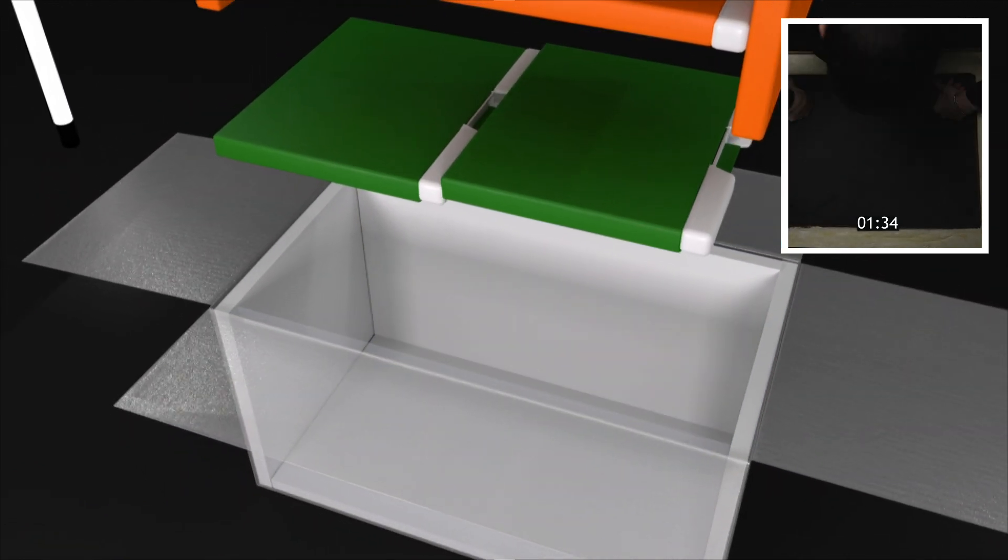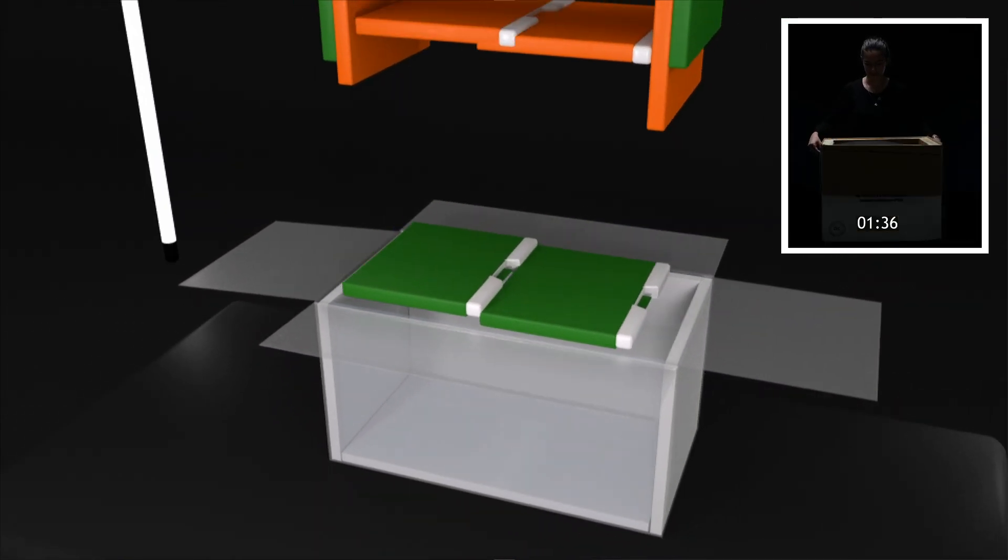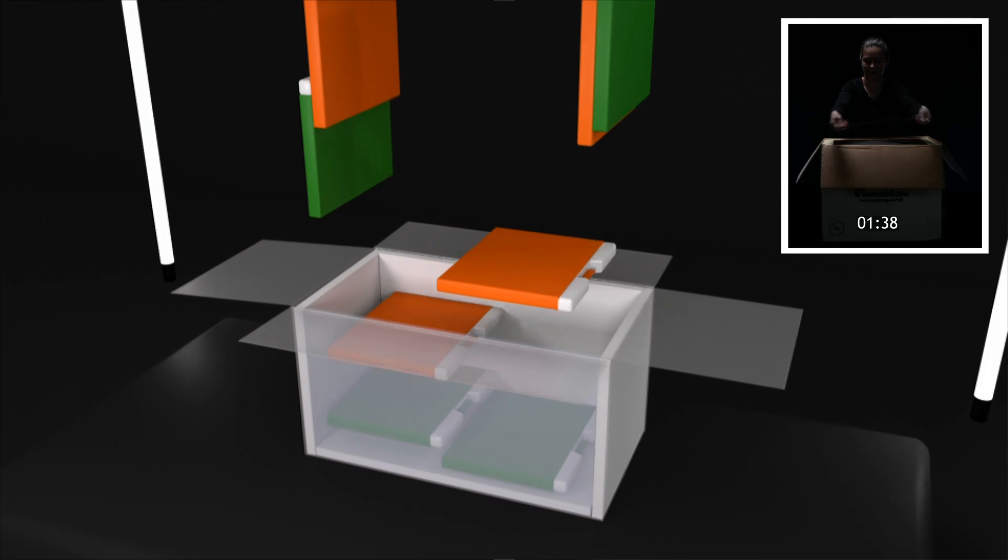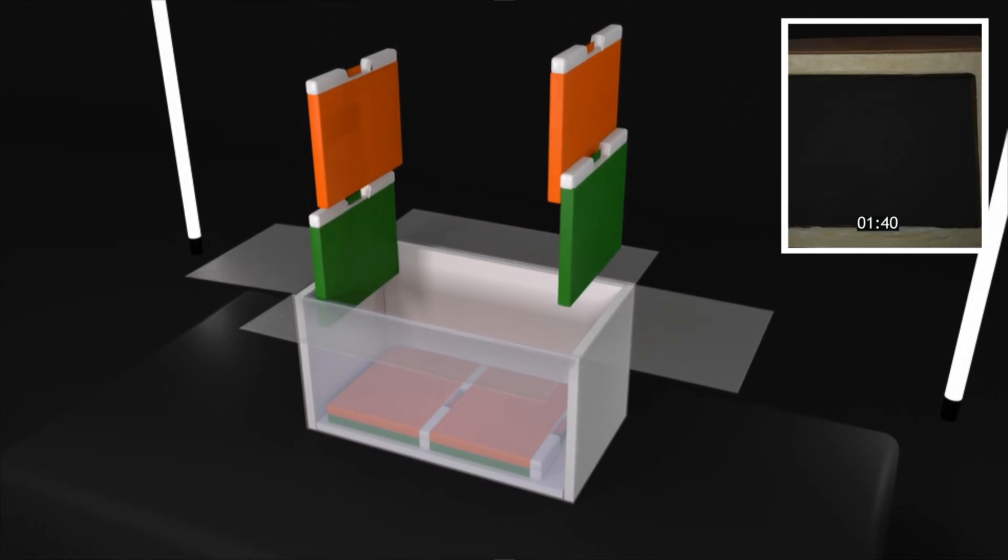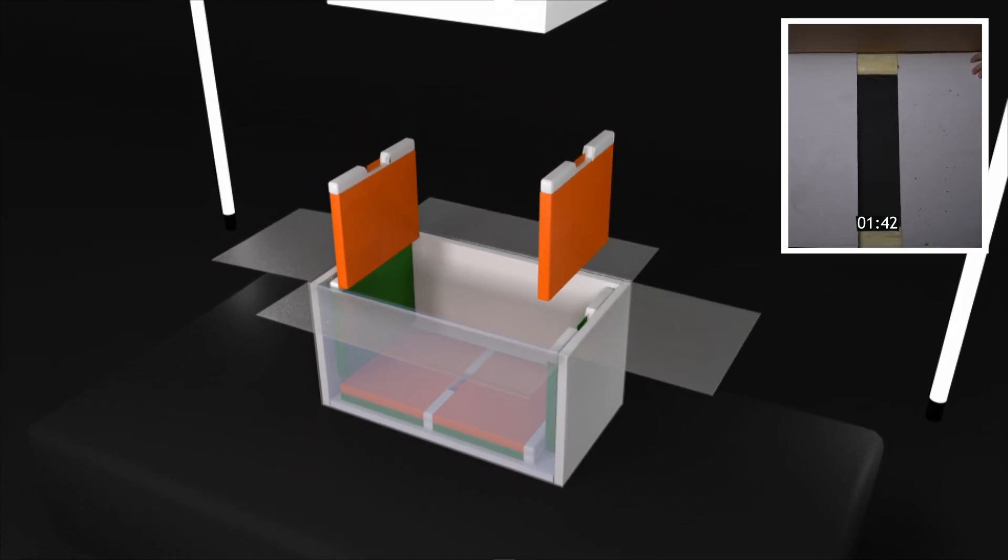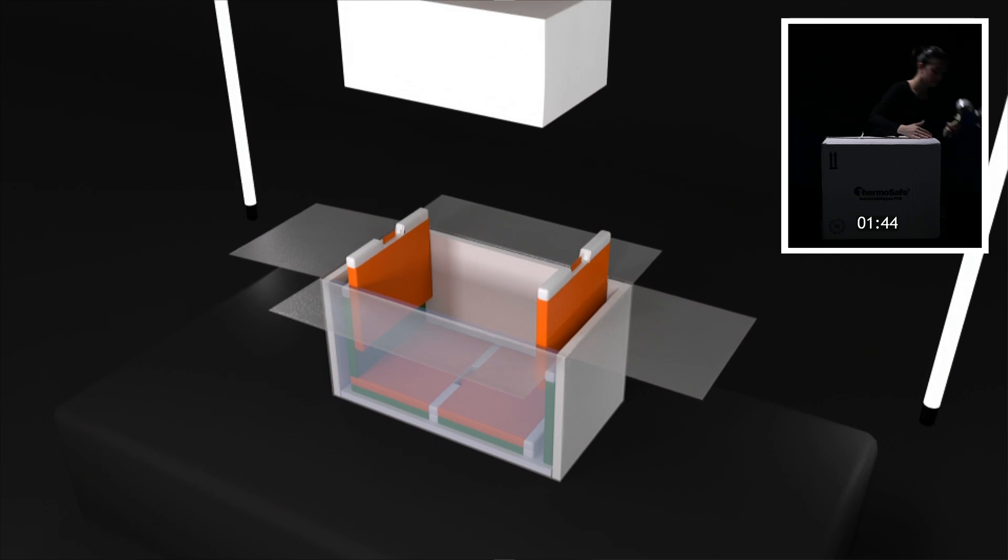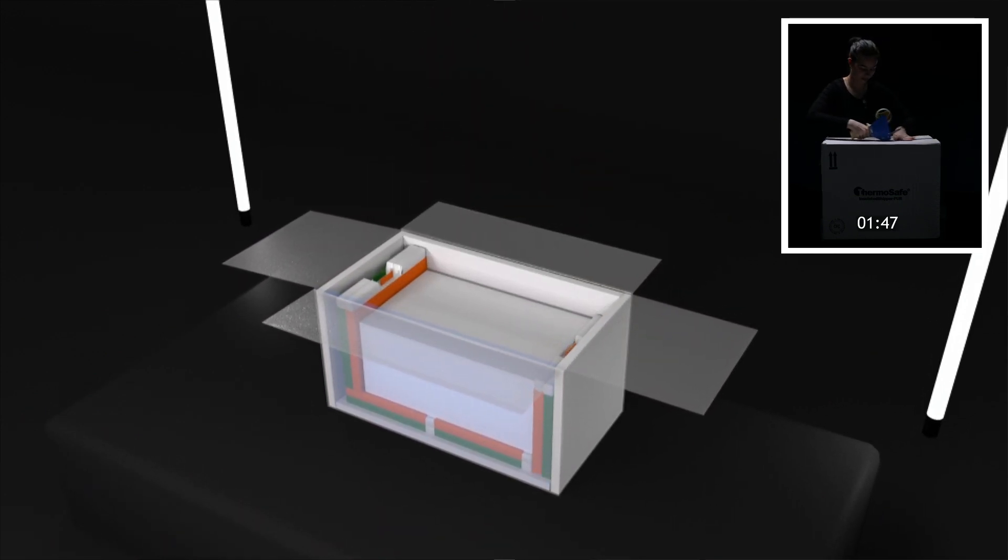All that's left to do is ensure that the green phase change packs line the bottom and vertical walls of the shipper before stacking an orange phase change pack on top of and next to each green pack so that only the orange packs make contact with the payload box.